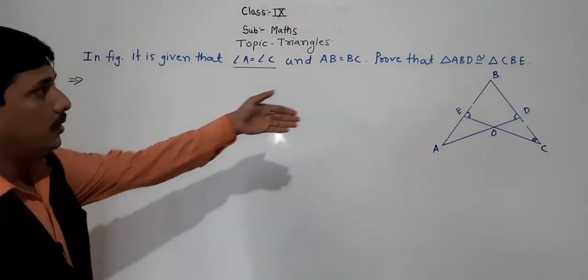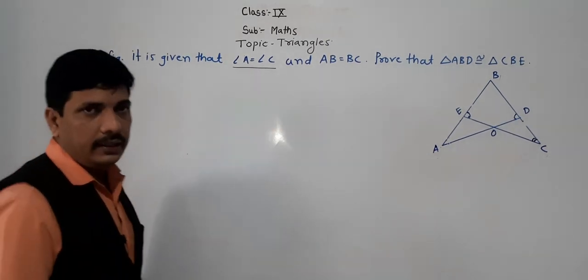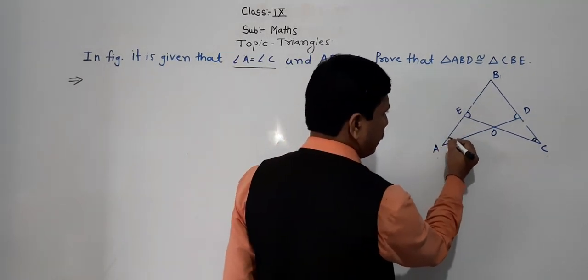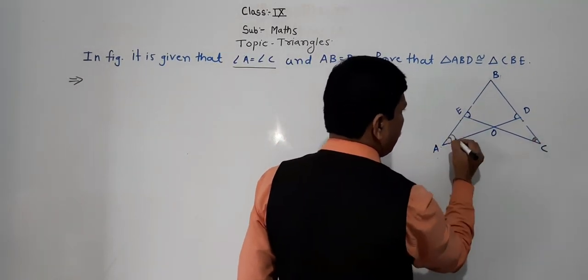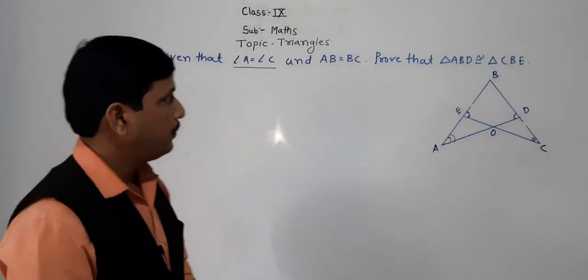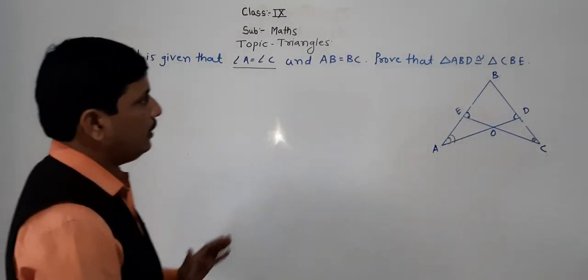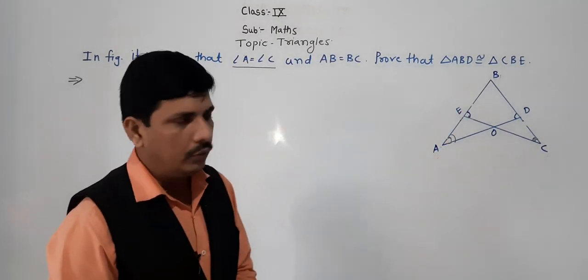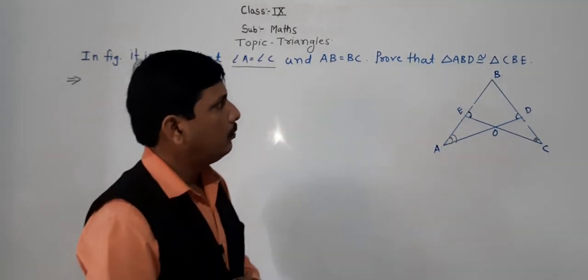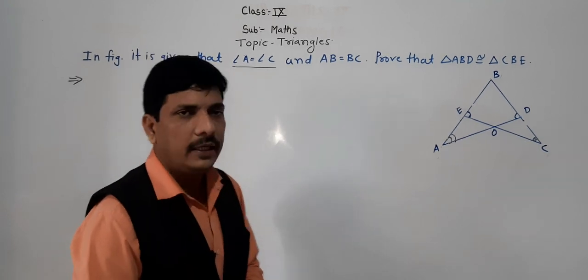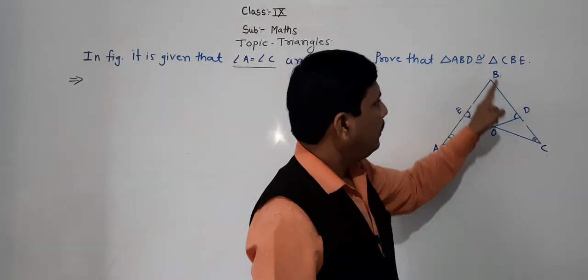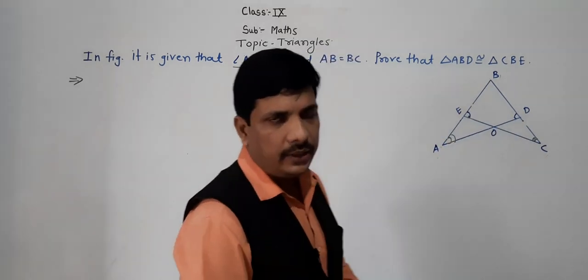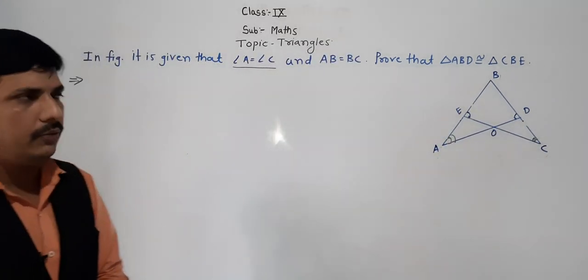A figure is also given here. Angle A and angle C are equal — both angles are the same. The second thing: AB and BC are equal. With the help of these, we have to prove that triangle ABD is congruent to triangle CBE. That is what we have to prove.